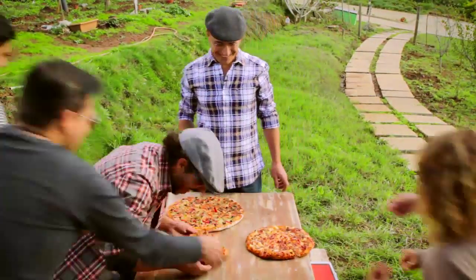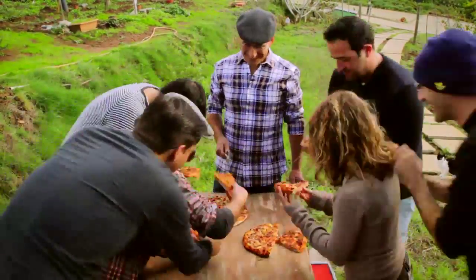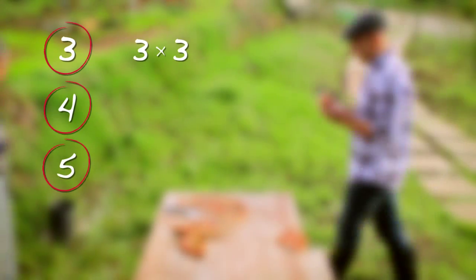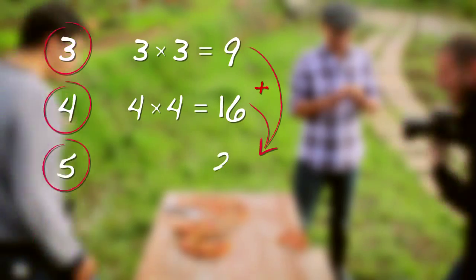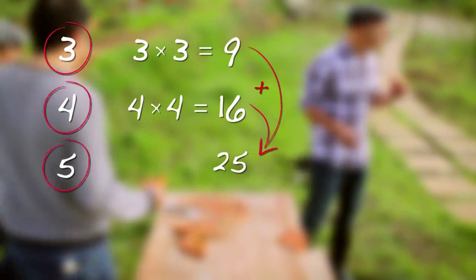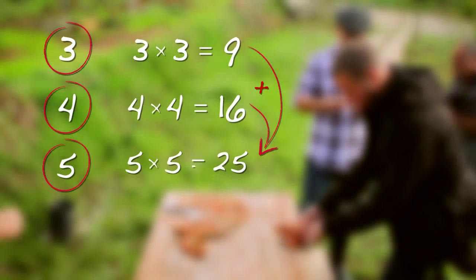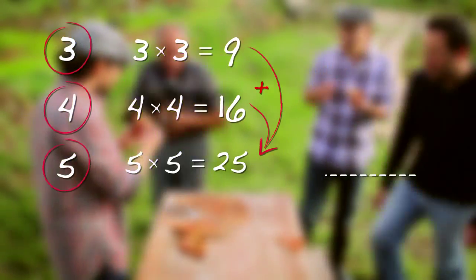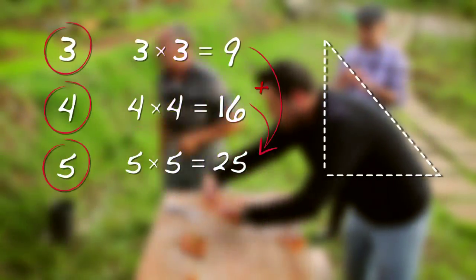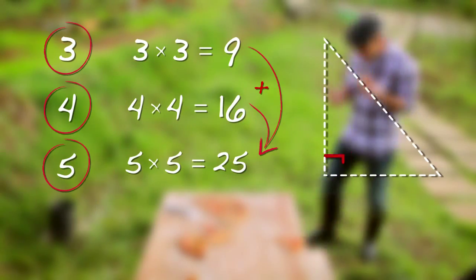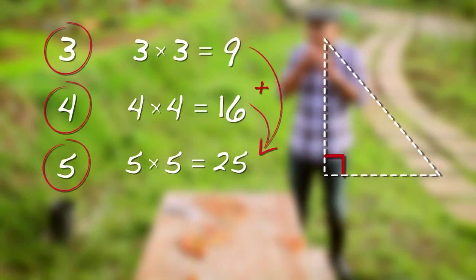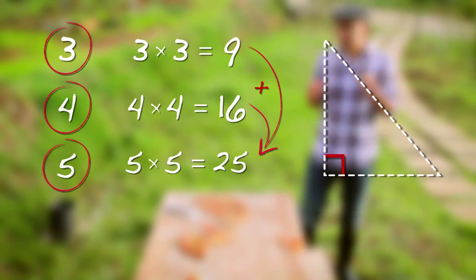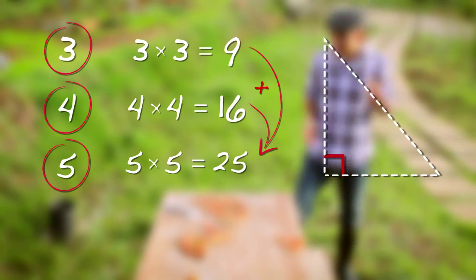Let's say we've got three measures: 3, 4, and 5. 3 times 3 is 9, and 4 times 4 is 16. 9 plus 16 is 25, which is exactly 5 times 5. A triangle built with these measures is most definitely a right triangle. Whenever you spot three integers like these, you have found a Pythagorean triple.